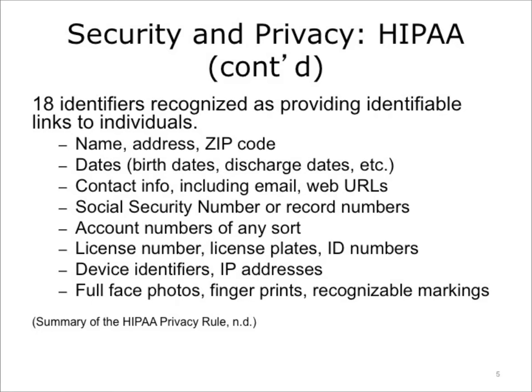Under HIPAA, 18 different identifiers are recognized as providing identifiable links to individuals. 1. Names. 2. All geographical subdivisions smaller than a state, including street address, city, county, precinct, zip code, and their equivalent geocodes — except for the initial three digits of a zip code if, according to current publicly available data from the Bureau of Census, the geographic unit formed by combining all zip codes with the same three initial digits contains more than 20,000 people, and the initial three digits of a zip code for all geographic units containing 20,000 or fewer people is changed to 000.